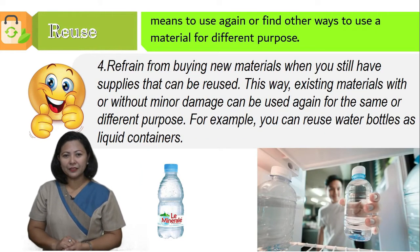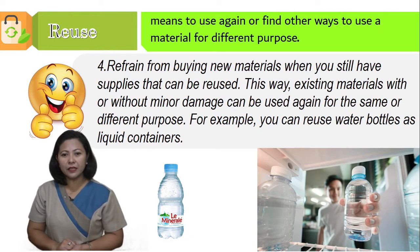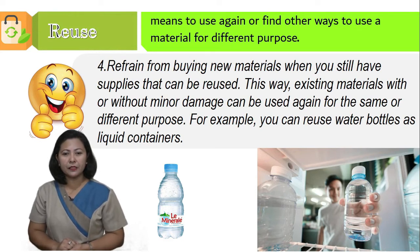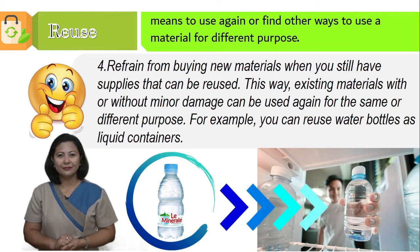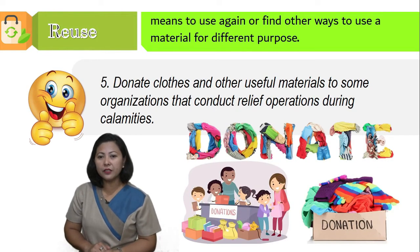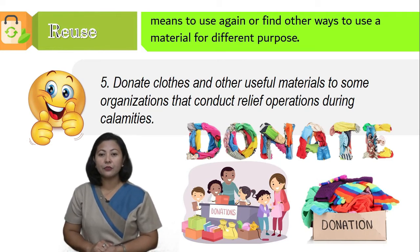Fourth, refrain from buying new materials when you still have supplies that can be reused. Existing materials with or without minor damage can be used again for the same or different purpose — for example, reusing water bottles as liquid containers. You can also donate clothes and other useful materials to organizations that conduct relief operations during calamities.